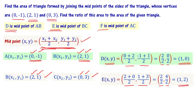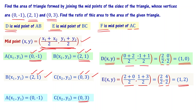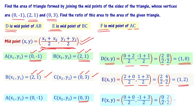Now we find the coordinates of F, the midpoint of AC. Using A = (0, -1) and C = (0, 3): F = ((0 + 0) / 2, (-1 + 3) / 2) = (0/2, 2/2) = (0, 1). So the coordinates of F are (0, 1).